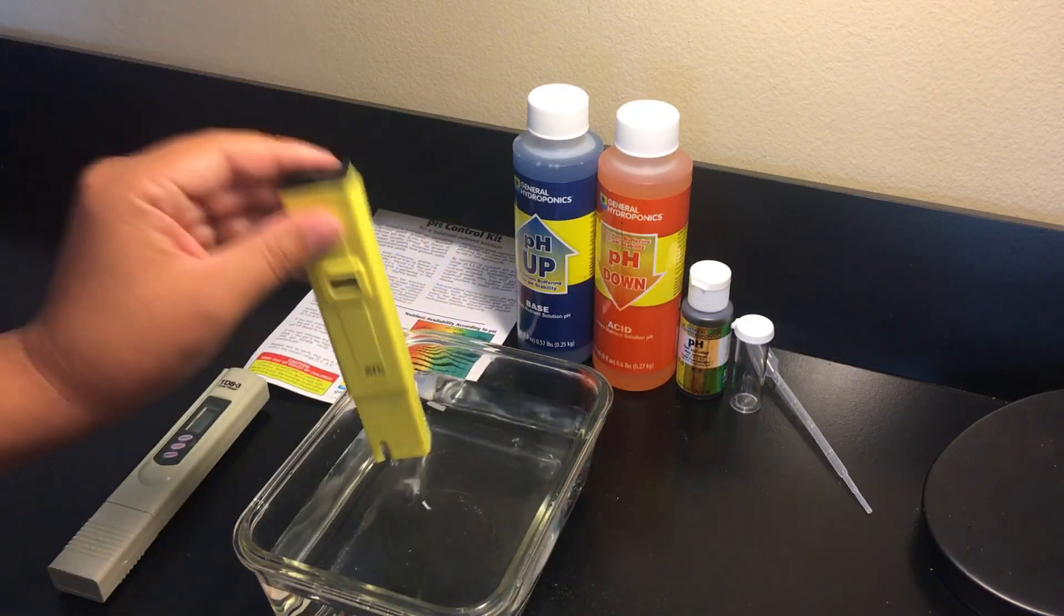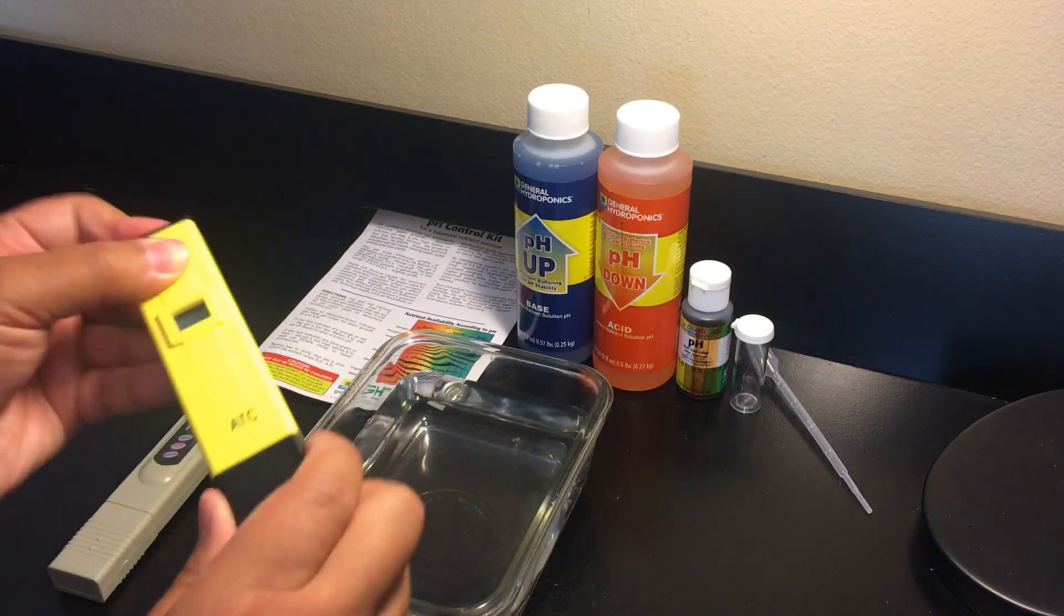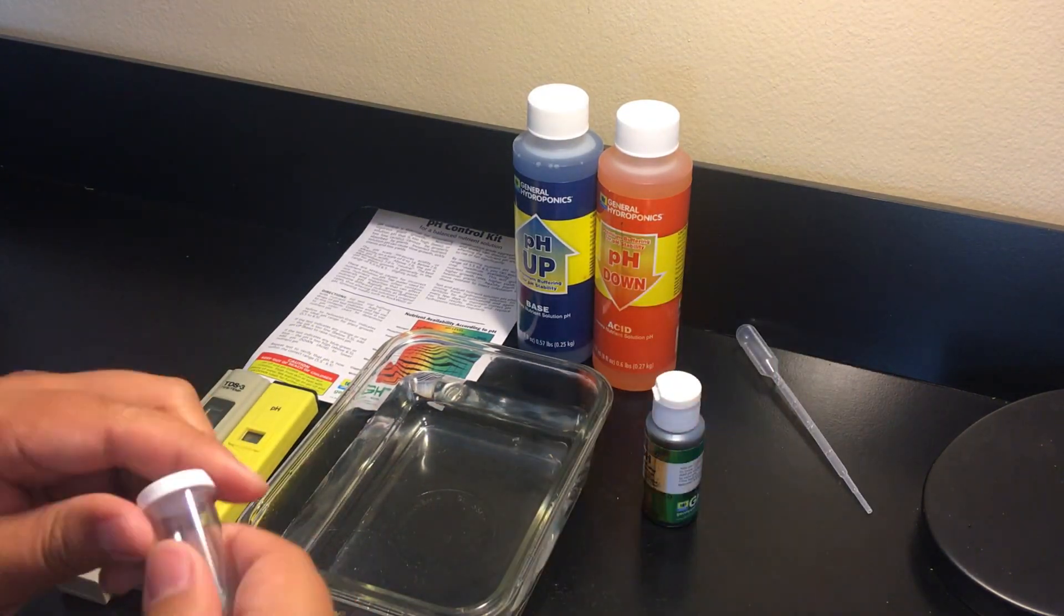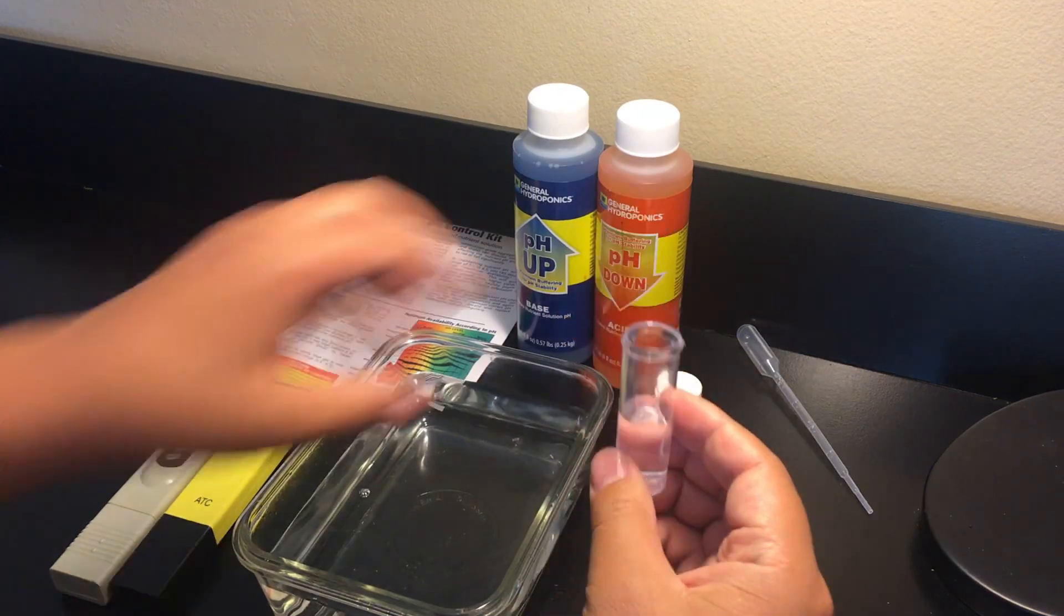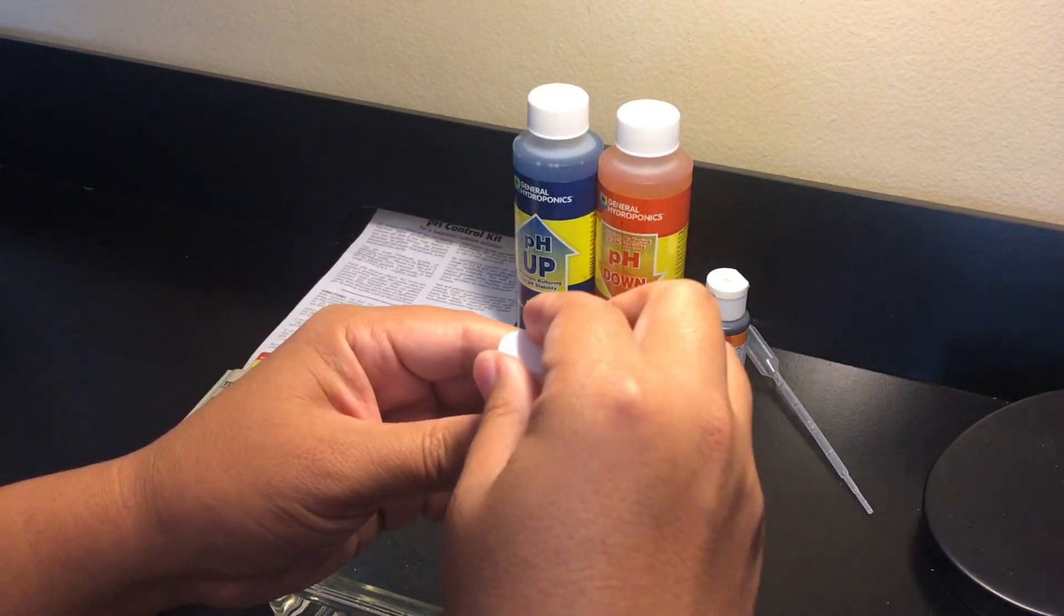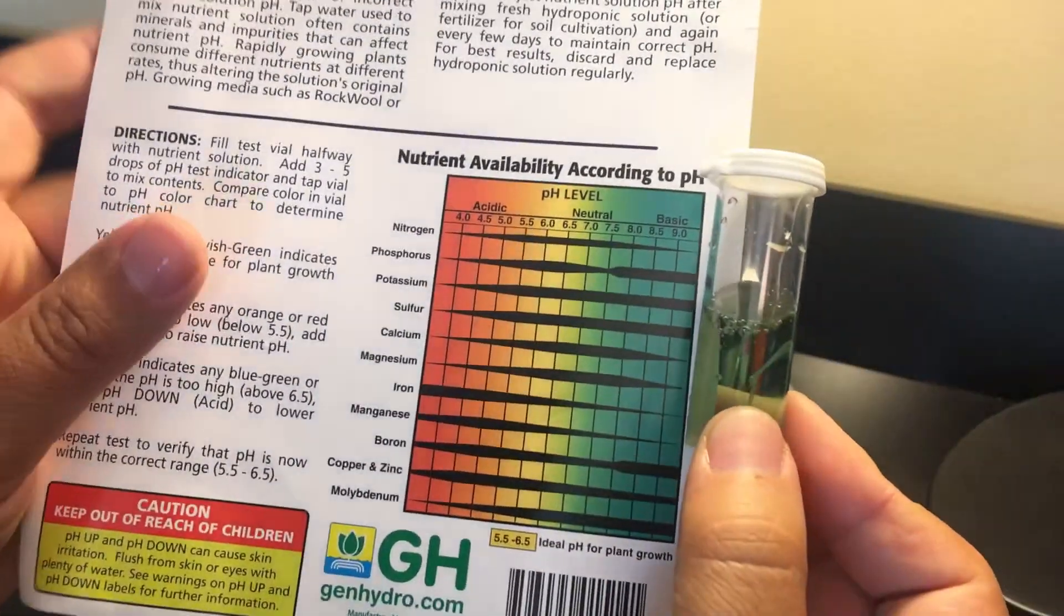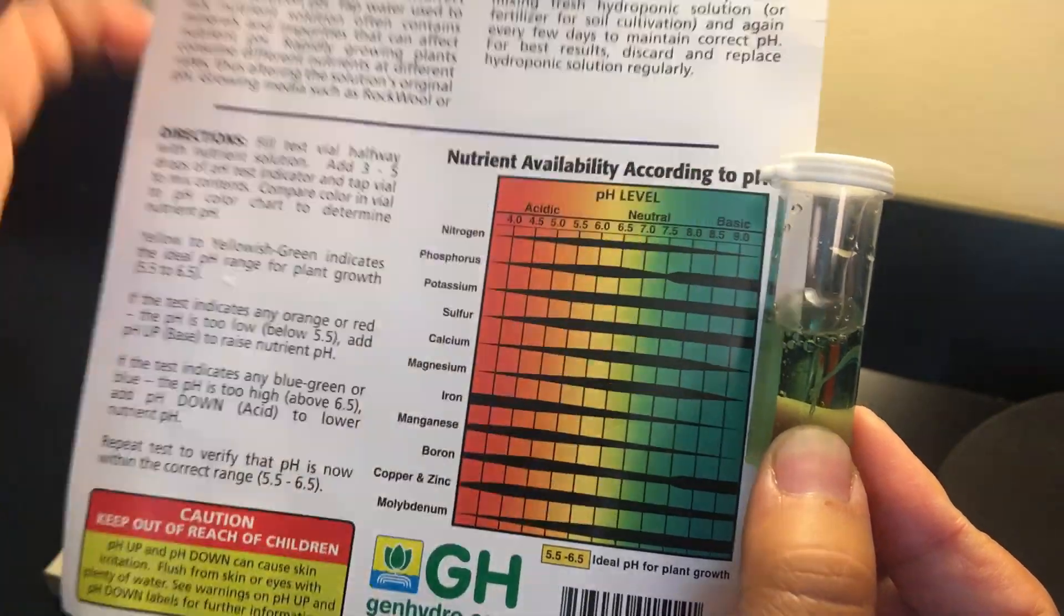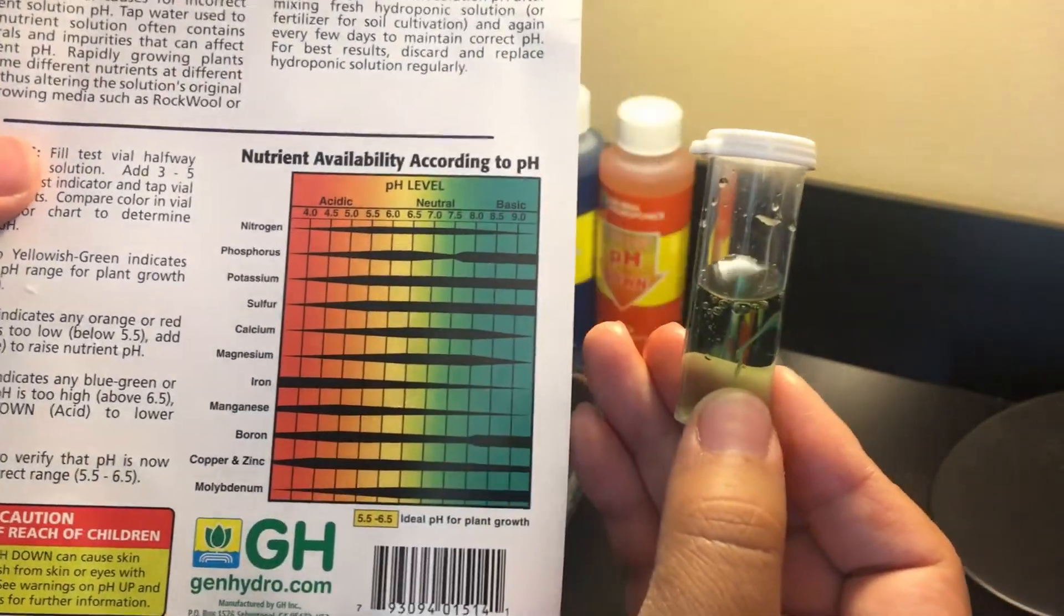Now if you're on a budget or rarely need to use one, a pH test kit will do the same thing but it takes a little bit more work. You'll want to add some water into a beaker, drop a few drops of the test solution, mix it and then match the color of the water with the pH guide. As you can see here both the digital meter and the test kit shows a pH of about 7.5.